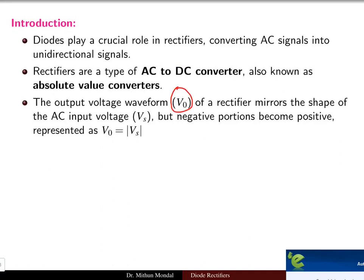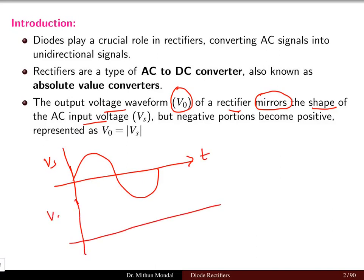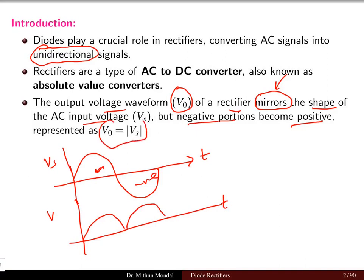The output voltage waveform of a rectifier is just the mirror of the shape of the AC input voltage Vs. The output voltage V0, which is unidirectional, will have a mirror shape — the negative portion becomes positive. So the output voltage will be equal to the magnitude of Vs, i.e., |Vs|.